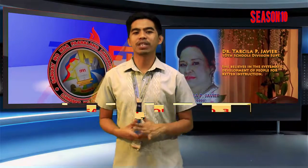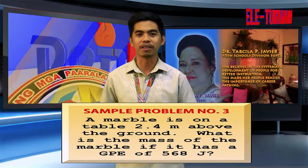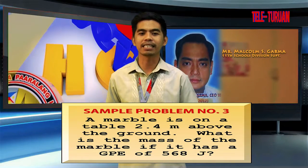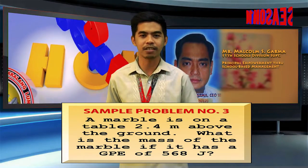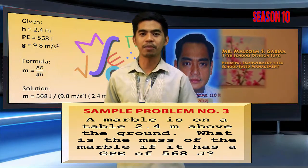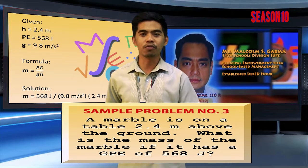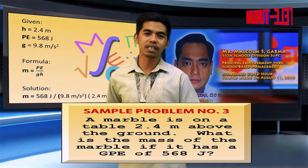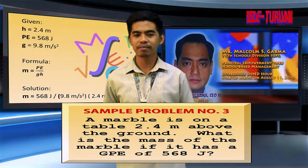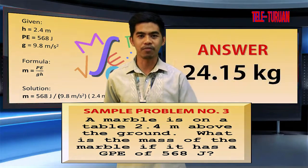Sample problem number three: a marble is on a table 2.4 meters above the ground. What is the mass of the marble if it has a gravitational potential energy of 568 joules? Using the formula m is equals to potential energy over gravitational constant multiplied by height, we will derive at an answer of 24.15 kilograms.